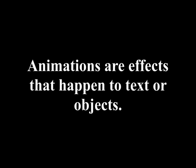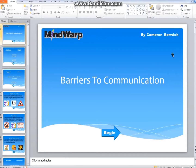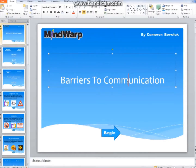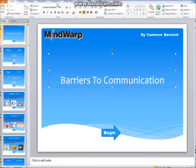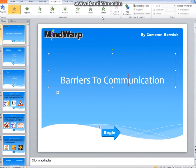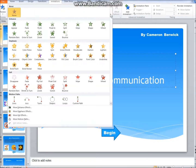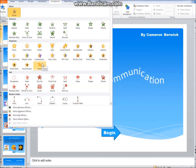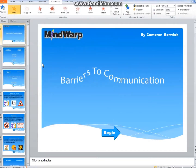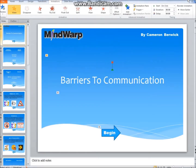Next we will look at animations. Animations are effects that happen to text or objects. To add an animation, select the text or object you want to animate. Move the mouse to the animations bar, then click on the more button to see the list of available animations. Click on your chosen animation to apply it.